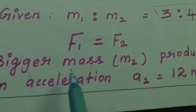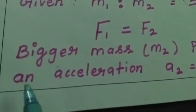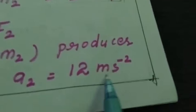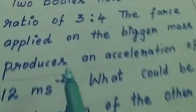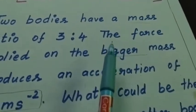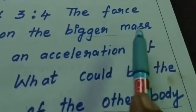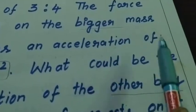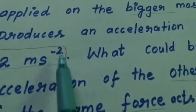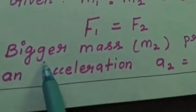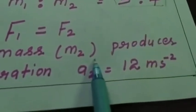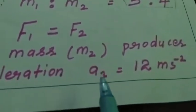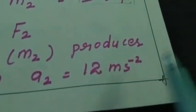The bigger mass m2 produces an acceleration a2 equal to 12 meter per second square. The force applied on the bigger mass produces an acceleration of 12 meter per second square, so a2 equal to 12 meter per second square.